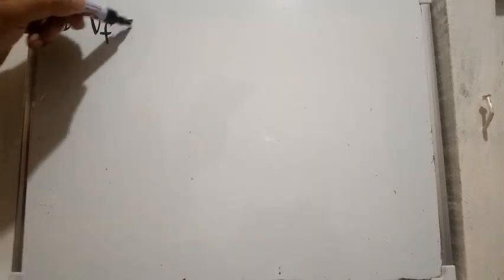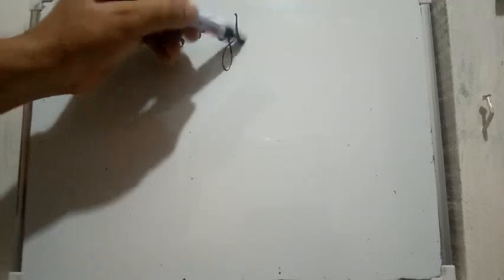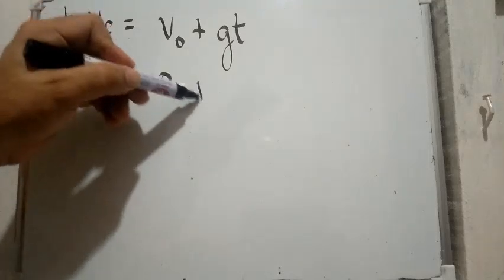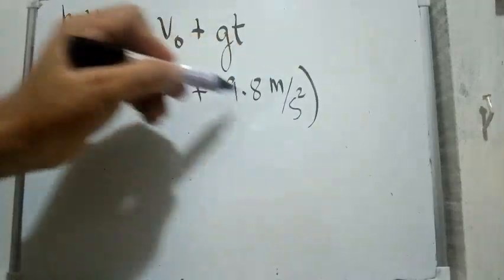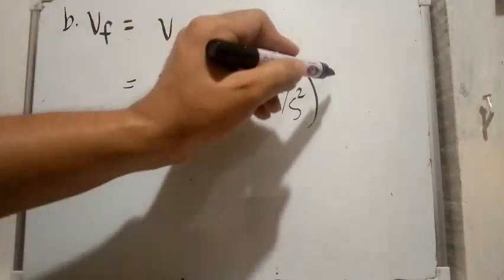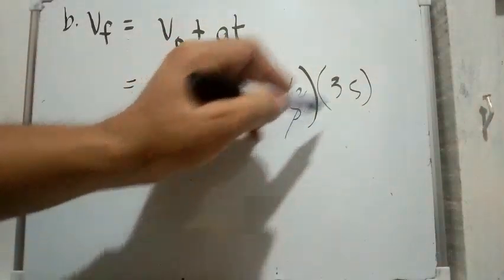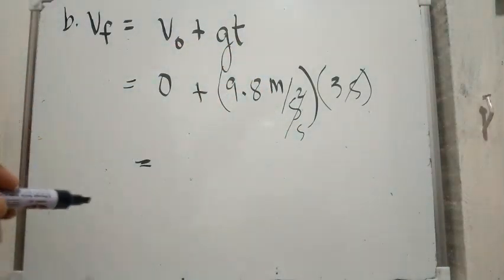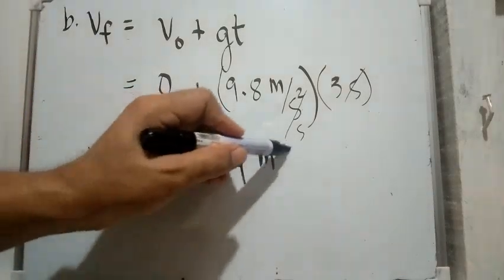Next, for the final velocity: final velocity equals v sub o plus g times t. That is equal to initial velocity zero plus 9.8 m/s² times three seconds. One unit of seconds cancels, leaving one unit of s, so the final answer is v sub f equals 29.4 meters per second.